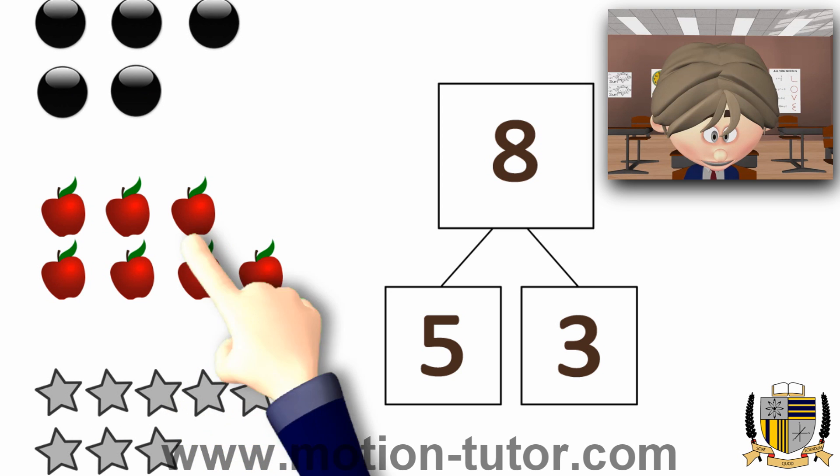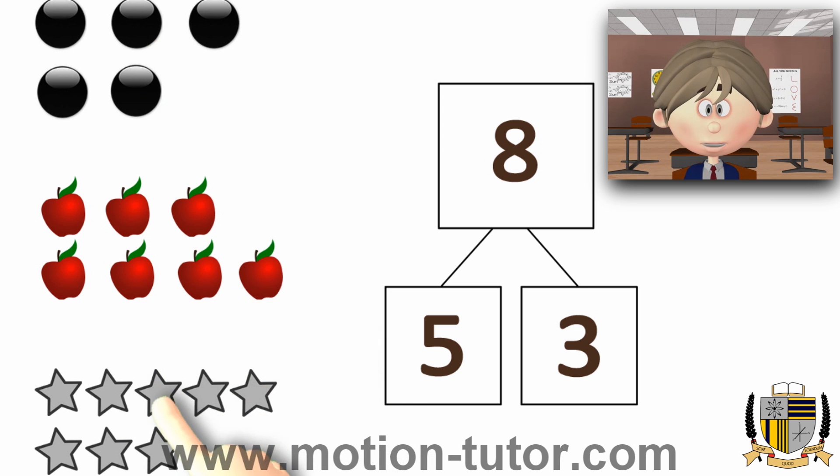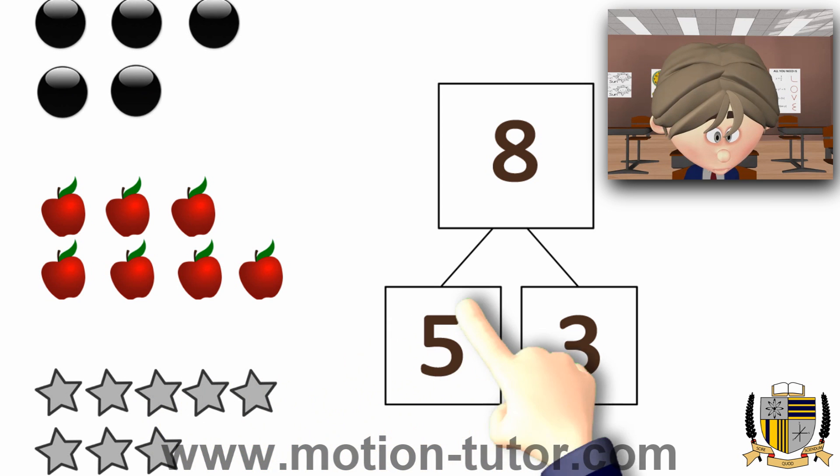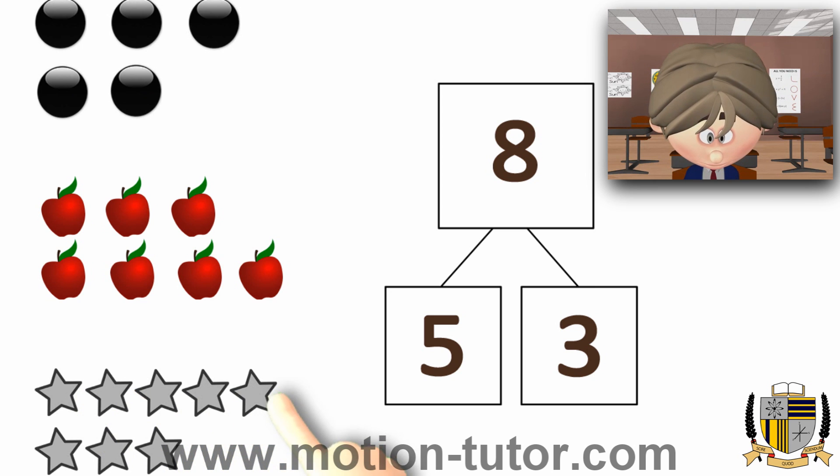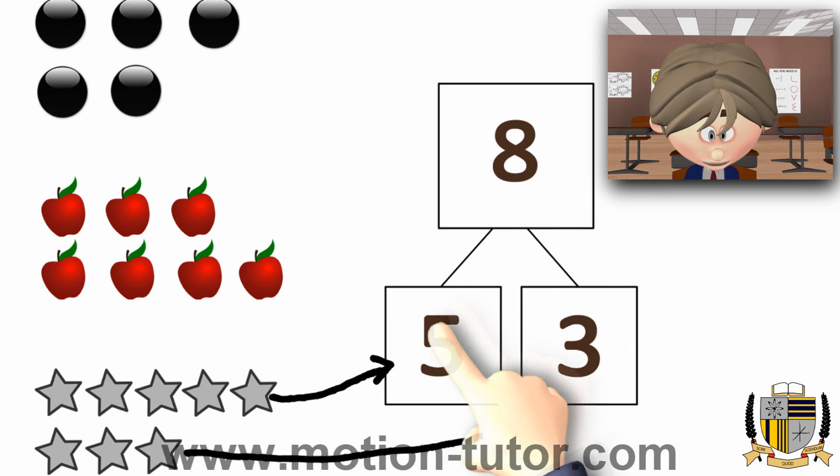So, out of the 3 pictures over here, the stars match the number bond. Because it's 8 stars and it's being broken into 5 over here and 3 over here. See, this 5 goes there and then the 3 goes here. And so together, they become 8. So, this image of stars matches that.